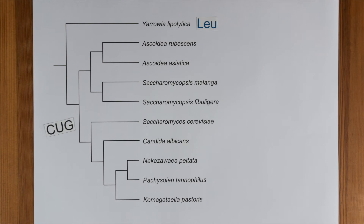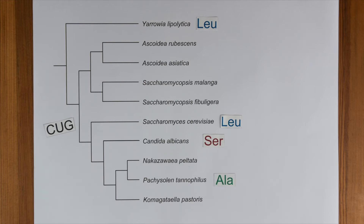Most yeasts, including baker's yeast, translate CTG as leucine. A distinct group including human pathogens translates CTG as serine. And yet another yeast translates CTG as alanine. This suggests a common fundamental event in yeast evolution. In our study, we found a second species translating CTG as alanine.